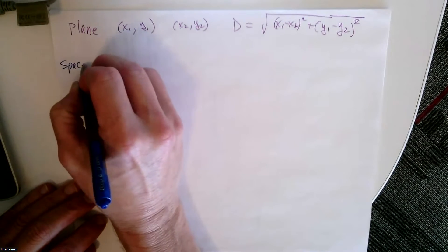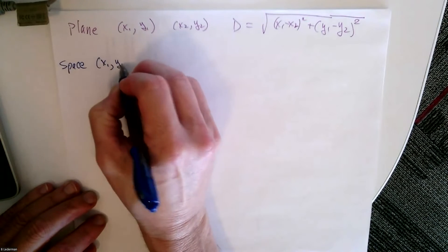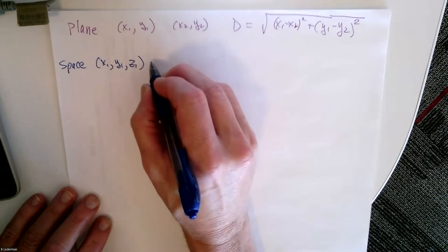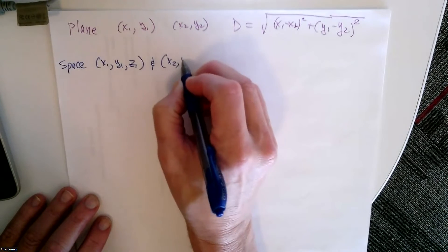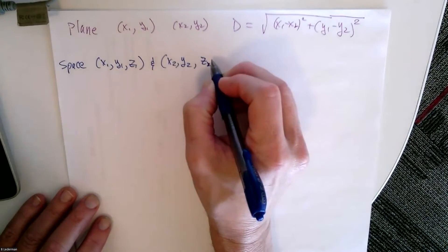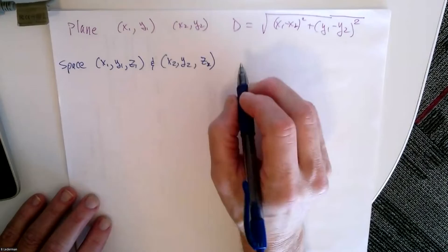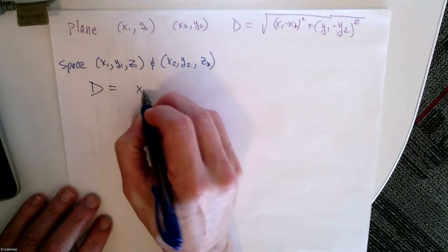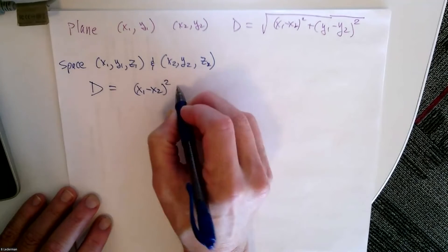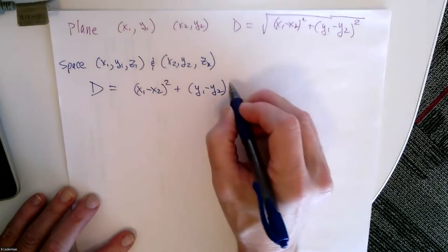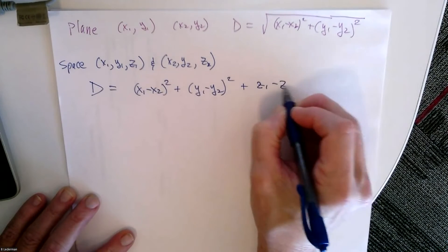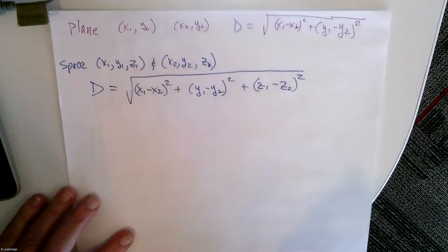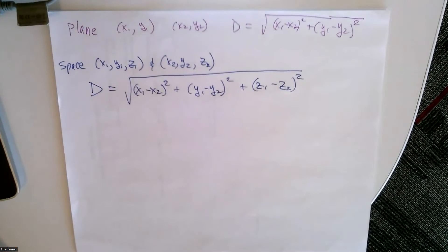Now we're going to extend this to three dimensions. If I'm in space and I have the point x1 comma y1 comma z1 and the point x2 comma y2 comma z2, the distance is equal to the square root of x1 minus x2 squared plus y1 minus y2 squared plus z1 minus z2 squared.